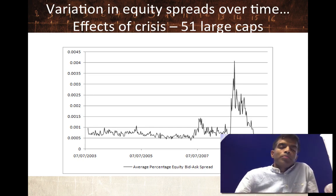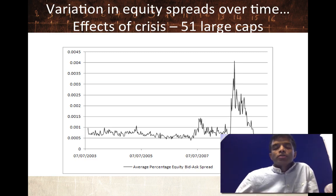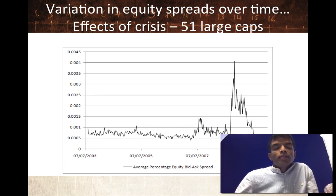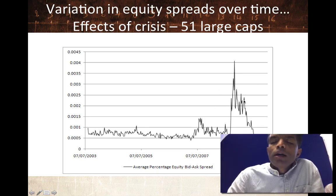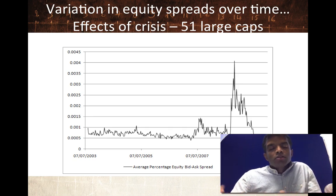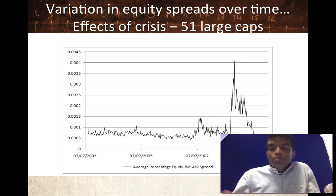Take the largest market cap companies — the spread might be 20 or 30 basis points, a very small number, until you have a crisis. This is a graph of the 2008 crisis and what it did to bid-ask spreads among the largest companies. Look at that spike — bid-ask spreads increasing during the crisis, staying elevated for about three to four months before the crisis dissipated and they came back down again. So if you're trying to trade in the middle of a crisis, your transactions costs are going to be higher simply because the spreads have widened.